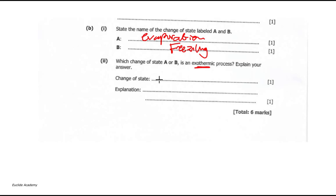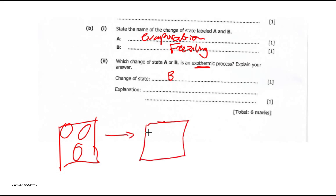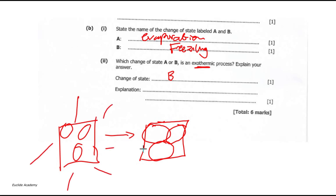The next question asks: which change of state, A or B, is an exothermic process? An exothermic process releases heat into the environment. So which one — evaporation or freezing — releases heat? The answer is B, freezing. The particles have kinetic energy; when you reduce that energy they give up heat, stop moving, become closely packed, and form ice.